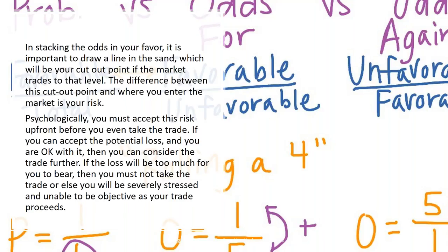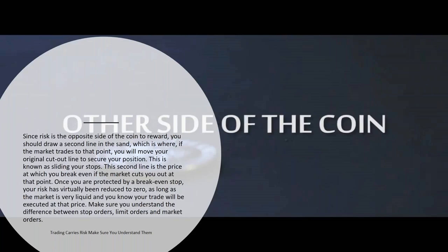Too much to bear doesn't mean you're going to go crying — it means if it will take too much out of your portfolio or capital stake. I can't tell you if a $100 risk is too much, because you could have a million-dollar portfolio. You have to decide your risk-reward ratio. Since risk is the opposite side of the coin of reward, you should draw a second line — where, if the market trades to that point, you will move your original stop loss to secure your position. This is known as sliding your stops.